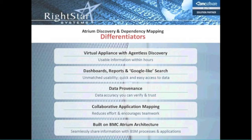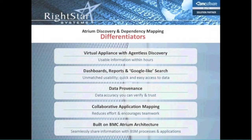The next differentiator is collaborative application mapping. Out of the box there are many business applications we know about — we've written the maps for them and know what to search for to build up those dependencies. But you probably have your own custom applications for your organization, and we allow you to build maps for those as well. You can extend beyond the business-level applications provided out of the box — which by the way are updated on a monthly basis — and create your own application maps for company-specific applications. The last differentiator is that it's built on the BMC Atrium architecture, enabling seamless sharing of information because all BMC applications natively consume the data in the CMDB.